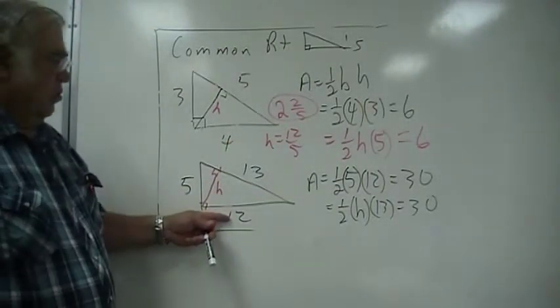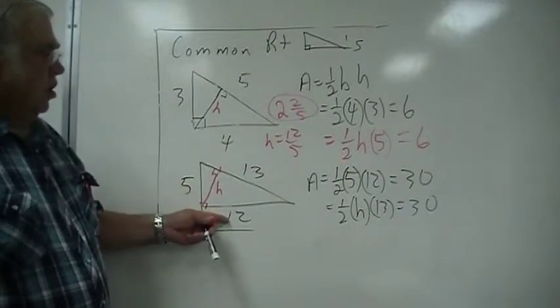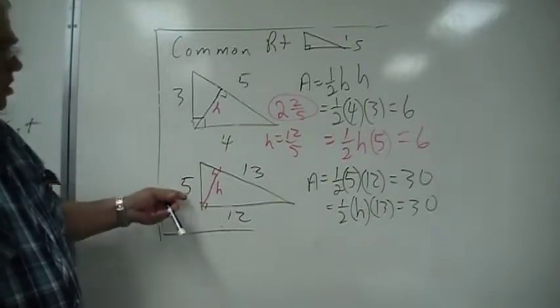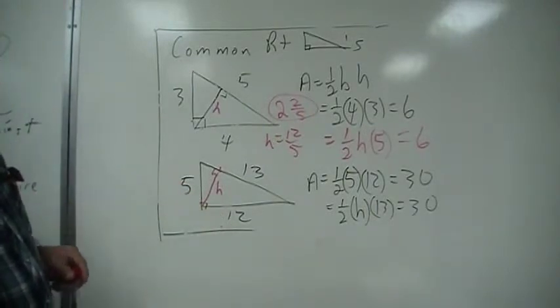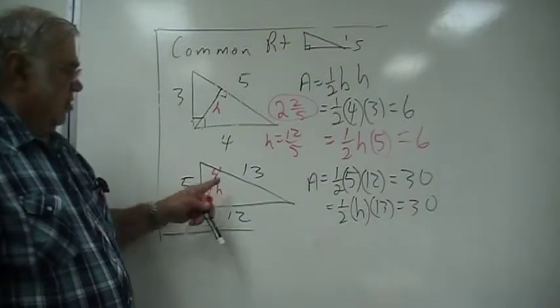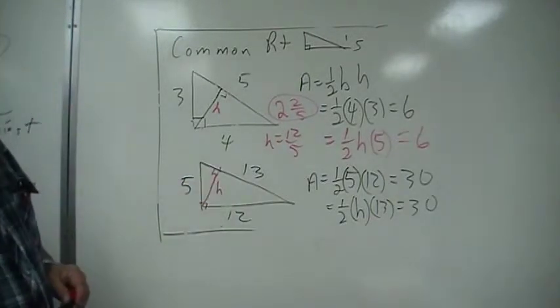All right, and the same thing with this one. The area would be 1/2 of 5 times 12, which is 1/2 of 12 is 6, times 5 is 30. And this is the same triangle, so half of this times this would give you what the H is there.